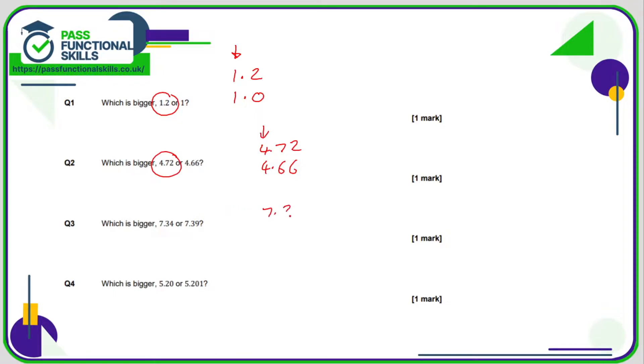Question 3, 7.34 and 7.39. Everything is the same in the units, everything is the same in the tenths column, but in the hundredths column we've got a 9 and a 4. Since 9 is bigger than 4, 7.39 is bigger than 7.34.